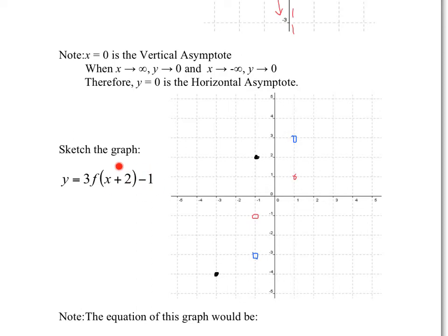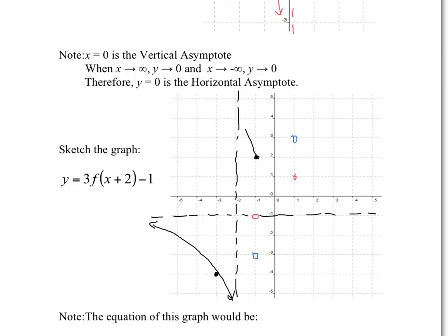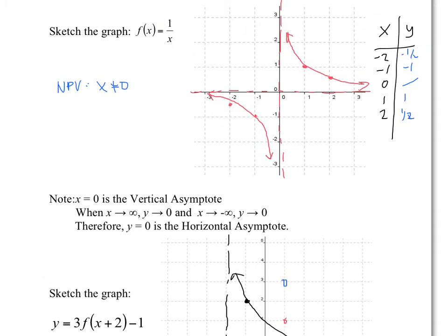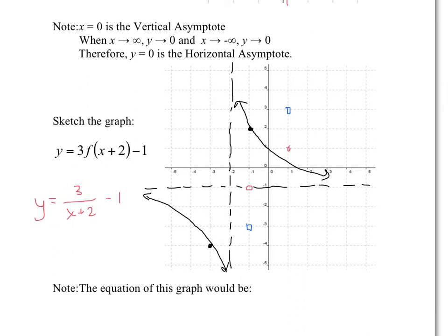Notice the asymptotes change as well. The horizontal asymptote shifts down 1, so it's now at y equals negative 1. The vertical asymptote shifts over 2, so it's now at x equals negative 2. The equation of this graph would be y equals 3/(x+2) − 1.